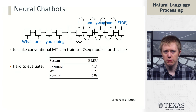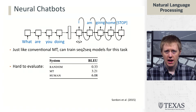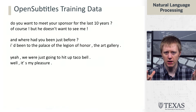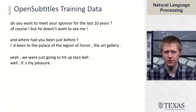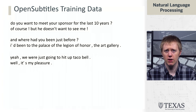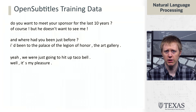Setting that aside, we can still take this as our paradigm for training these systems. One of the datasets that people use is called Open Subtitles. If we need a whole bunch of data about conversations — we talked earlier about Twitter as a source — we can also use subtitles for movies and zero in on people having conversations in movies, with things like 'where had you just been?' answered by 'I'd been to the palace of the legion of honor, the art gallery.'